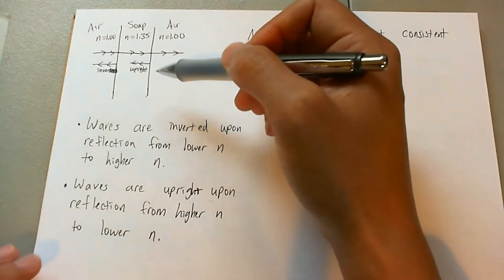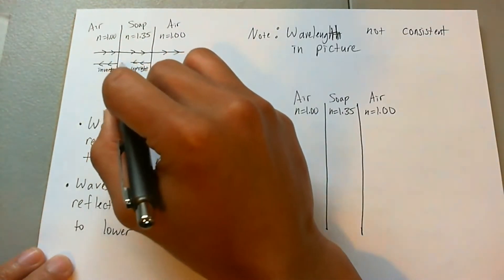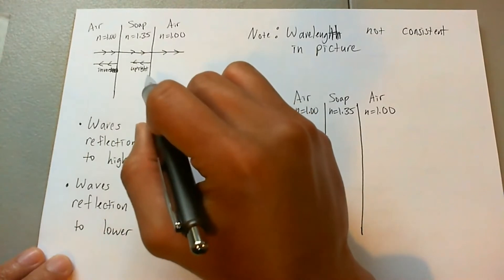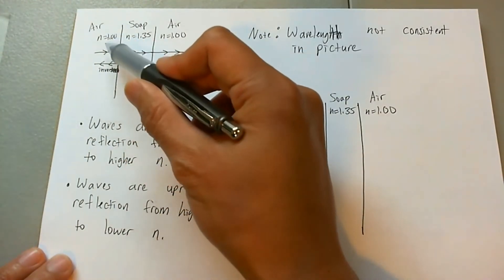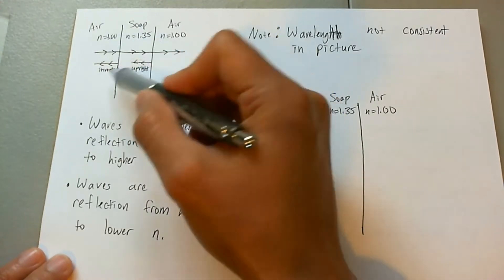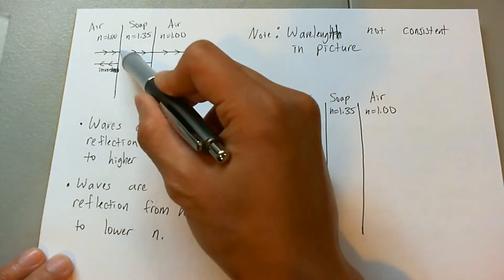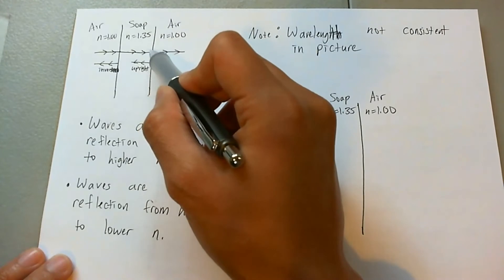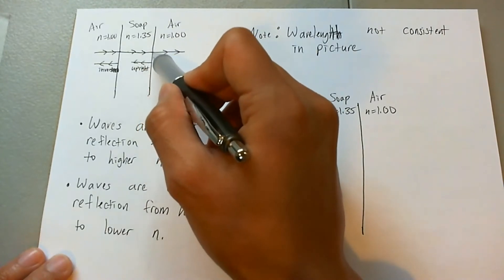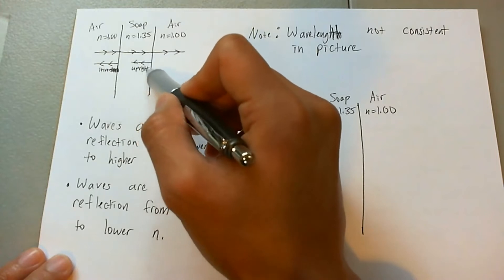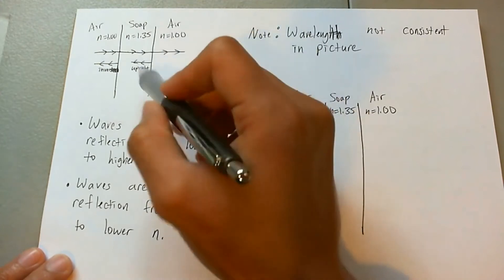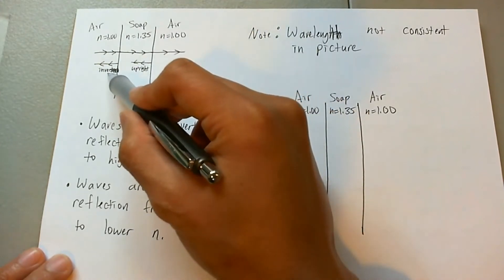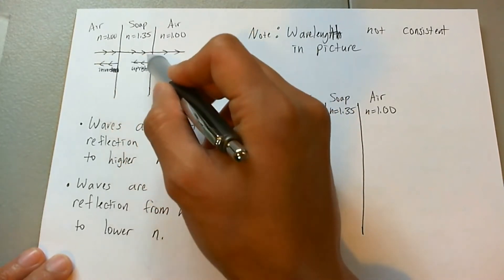With that said, you have two reflections that are going to come about from an incident light wave. The first reflection is going to be inverted because you're going from a lower to a higher index of refraction. The transmitted wave goes into the soap border and is reflected there. This second reflection is going to be upright because it's going from a higher index to a lower index of refraction. So you're going to have an inverted wave and an upright wave.